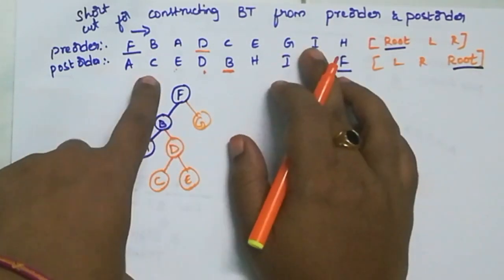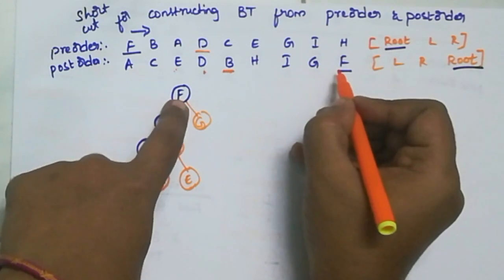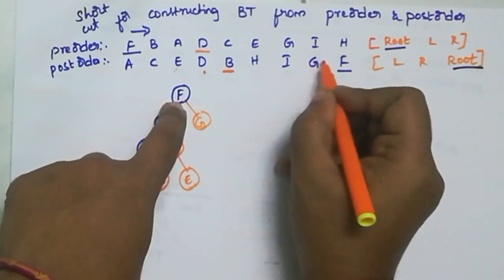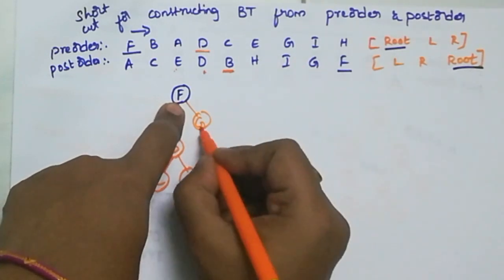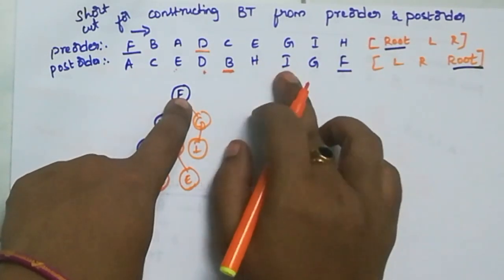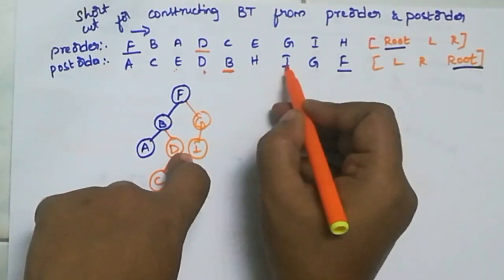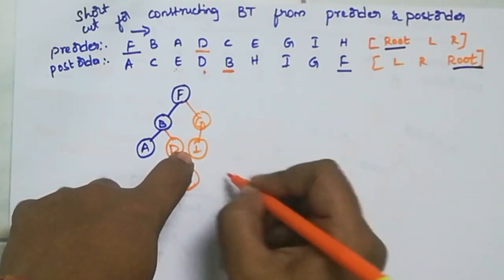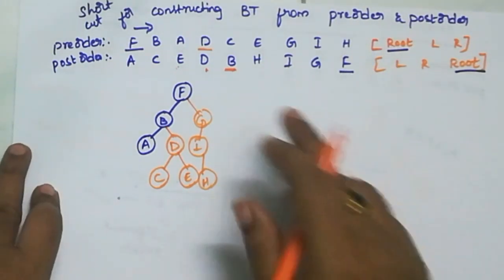Next element is I. So where is I? I is part of G's subtree. First of all, root element is F - F ki left side undhi. B is the root element, then G is the root element. G ki left element ledu, right element ledu, so obviously the first element I is moving to left element of G. Next element is H. H ni construct cheyali - I ane adhi subpart of H. So H ane adhi I ki left side undhi. But I ki left ledu, right ledu, so H ni left side allotment istanam.